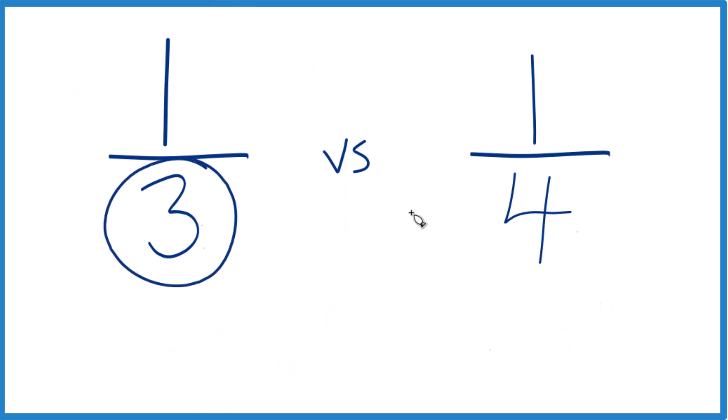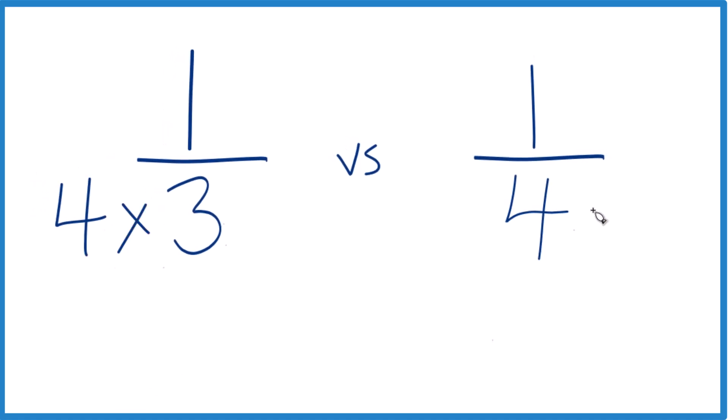The other way you can do this, if we had the same denominator, we could just compare the numerators. So we could multiply three times four here and the four times three here, because both of those will give us 12.